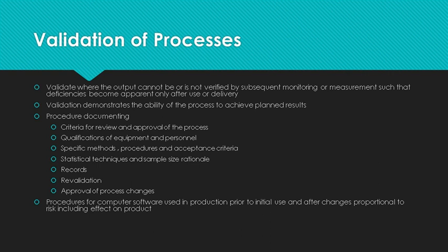The validation must demonstrate that the process parameter limits produce conforming product. Since this is ISO 13485, you need a validation procedure documenting the criteria for review and approval of the process, qualification of equipment and personnel, specific methods, procedures, and acceptance criteria, statistical techniques and sample size rationale, records, revalidation, and approval of process changes.